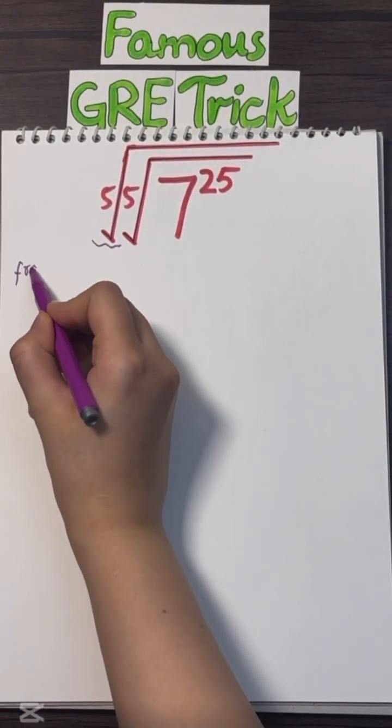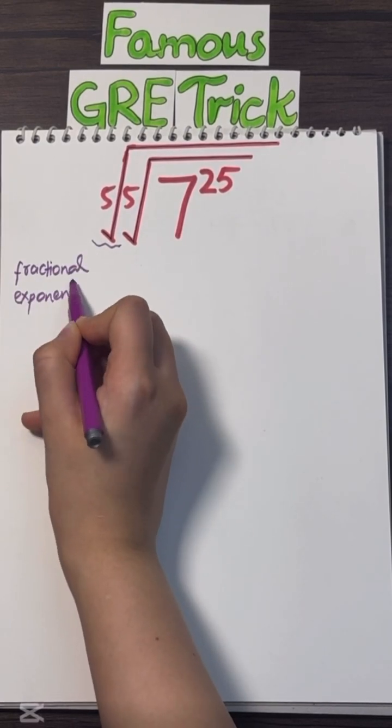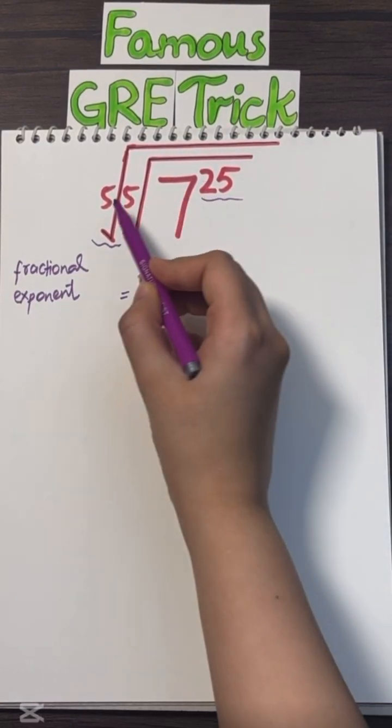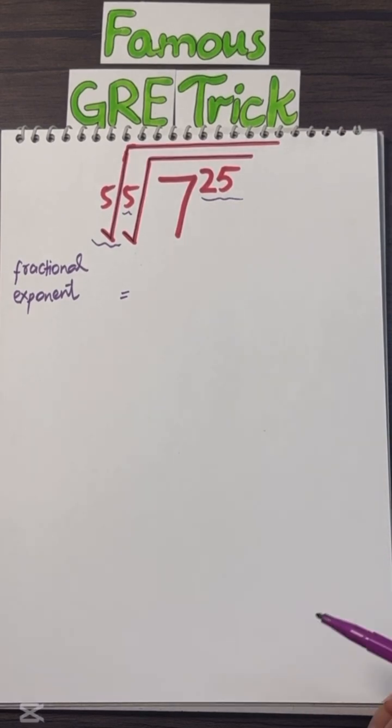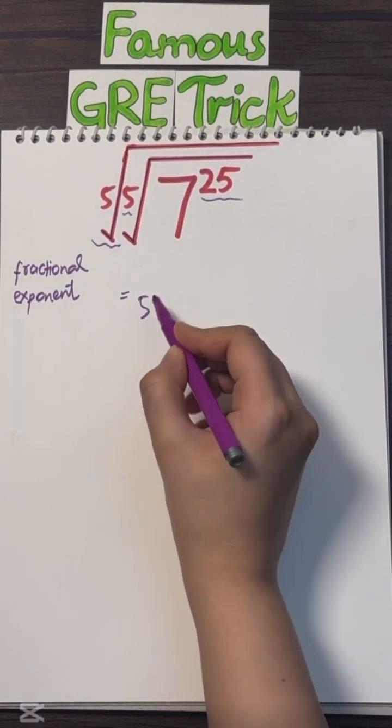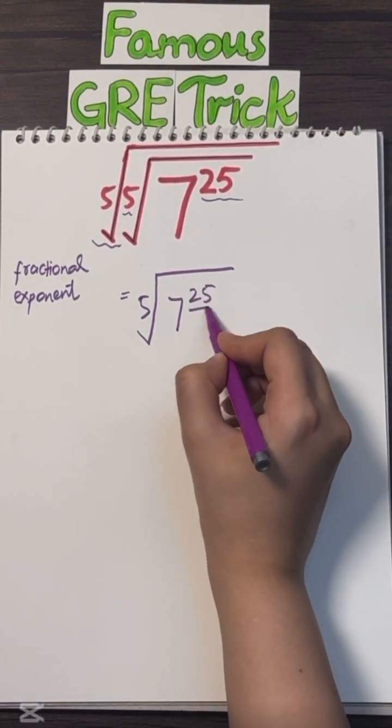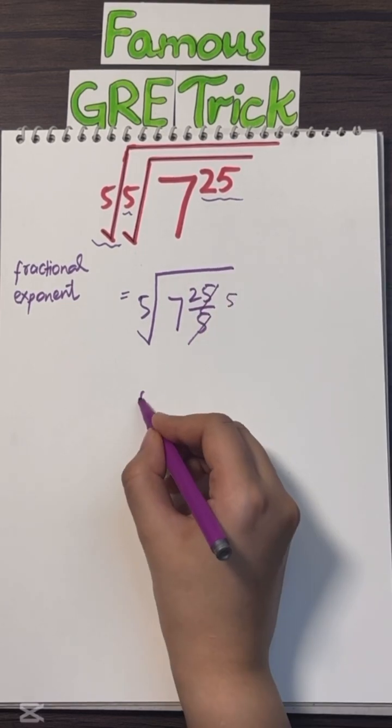Do you see this radical? We can rewrite this ugly thing as fractional exponent. So, the number inside the root becomes numerator, and the number outside becomes the denominator. So, it becomes 7 to the 25 fifths. 25 over 5 is 5, so now it's 5.